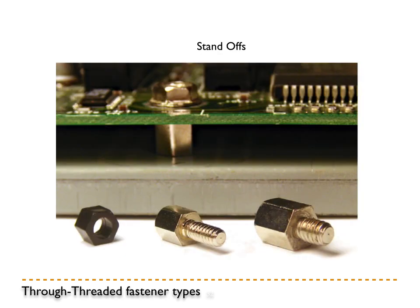Another type of fastener is called a standoff. These are used a lot with electronic boards to literally stand them off of something. You can see in the example a steel bar running through the bottom of the image, and the green electronics board is being held off that steel bar by a series of standoffs. These come in multiple sizes, materials, and types for whatever you need.